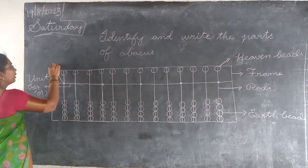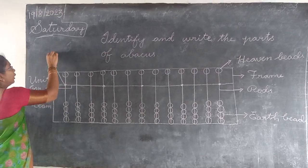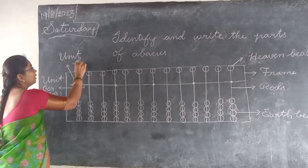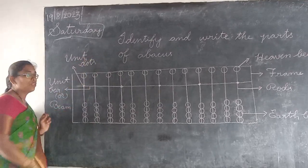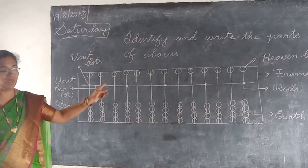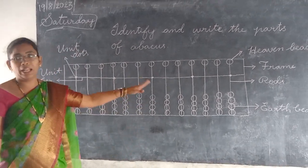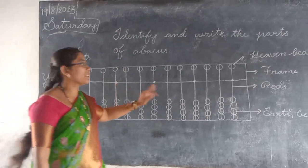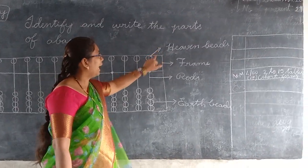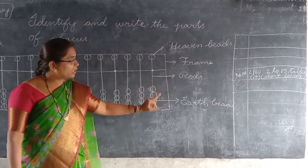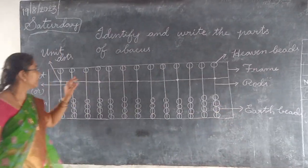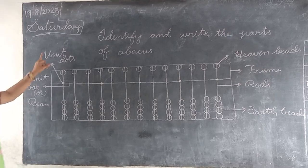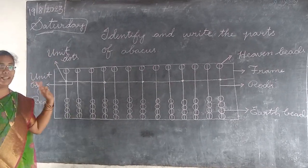Next, the dots are the unique dots. So first we have to learn the parts: frame, heaven beads, rods, unique beads. Unique dots — understand.